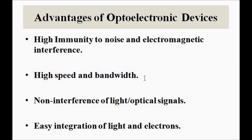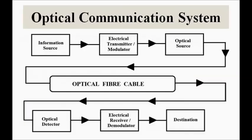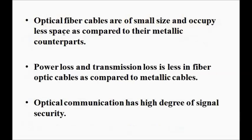Another important reason is that mostly semiconductor devices are used in optical communication systems, and it is very easy to integrate semiconductor devices with optical devices. All the various components — the modulator, optical source, fiber optics — involve semiconductors. The optical fiber cables, as the transmission medium, are of small size and occupy less space compared to metallic cables like coaxial or twisted pair cables. Power loss and transmission loss are also less in optical fibers compared to metallic cables. Data security is very high in optical communication — it is not easy to leak or hack data.